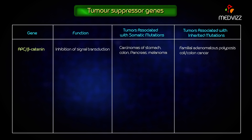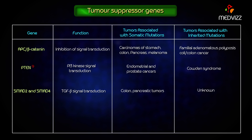APC and beta-catenin function in inhibition of signal transduction. Somatic mutations are associated with carcinomas of the stomach, colon, pancreas, and melanoma, while the inherited condition is familial adenomatous polyposis coli and colon cancer. PTEN functions in PI3-kinase signal transduction; somatic mutations are associated with endometrial and prostate cancers, and the hereditary condition is Cowden syndrome. SMAD2 and SMAD4 both function in TGF-β signal transduction; somatic mutations are associated with colon and pancreatic tumors, and hereditary associations are unknown.